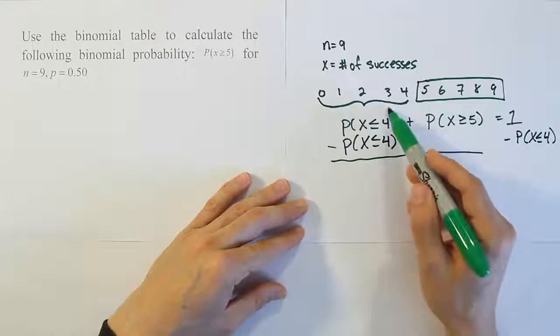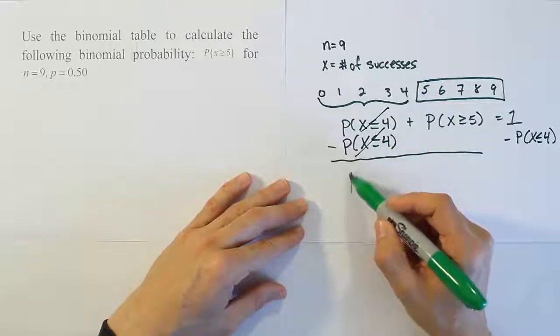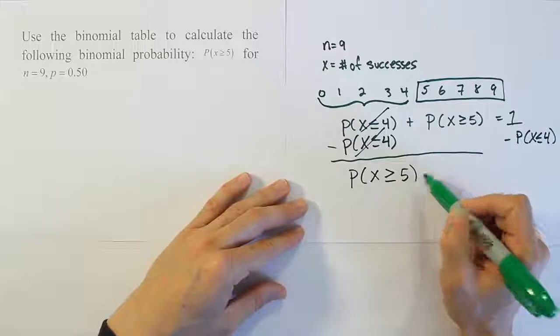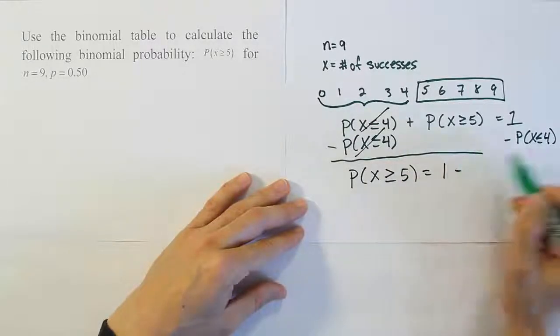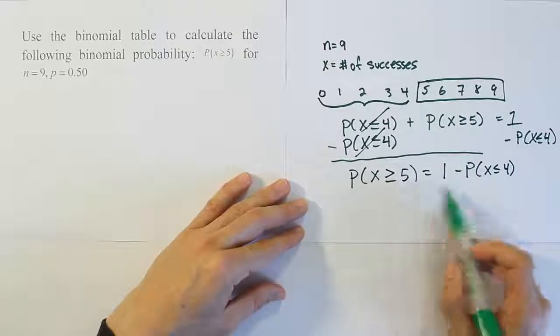And when I do that, I get an expression. This cancels out. I end up with the probability that x is greater than or equal to 5 is equal to 1 minus this guy, the probability that x is less than or equal to 4. And so that becomes my answer.